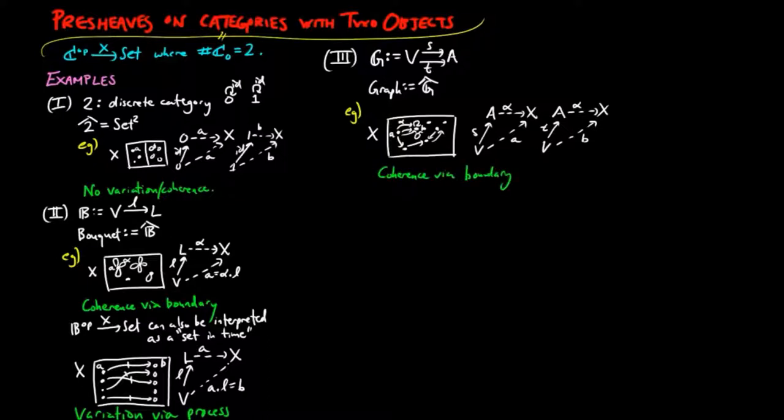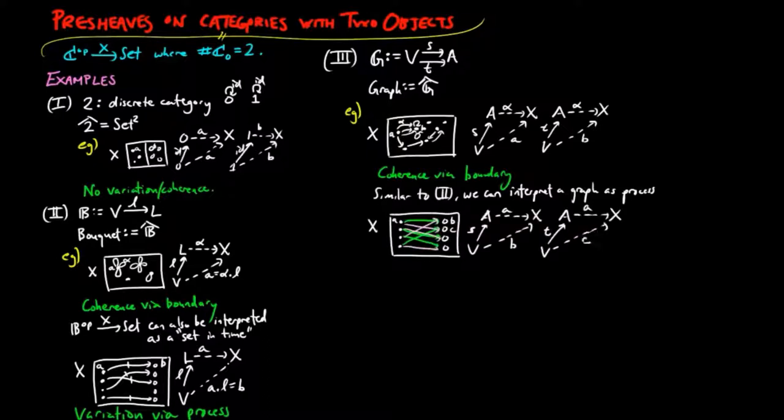So, here the cohesivity is by boundary. We could also try to visualize a container as a pair of set maps which share a common domain and a common codomain.